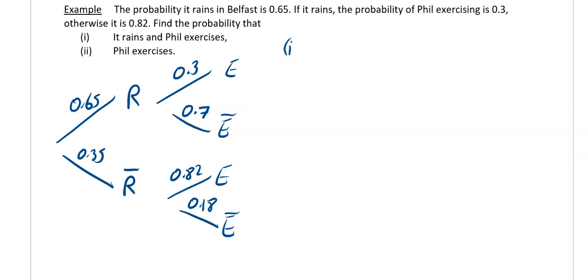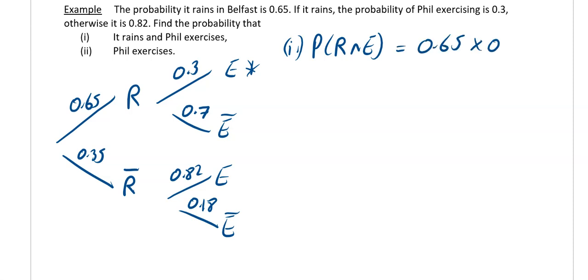We've got our tree diagram done. Part one says find the probability that it rains and Phil exercises — that's just this branch, so you multiply along: 0.65 × 0.3 = 0.195.